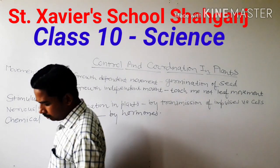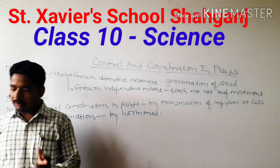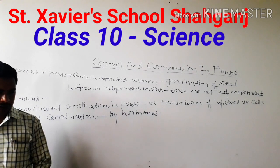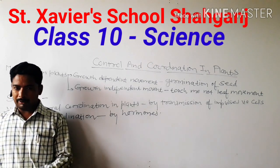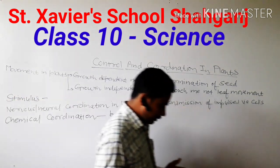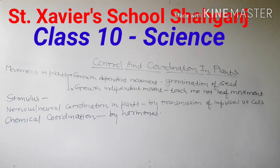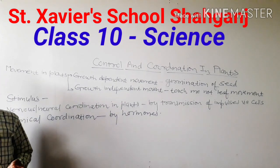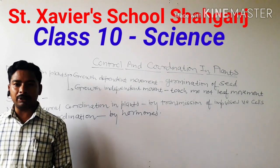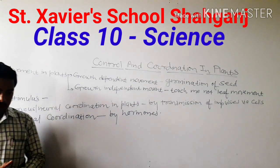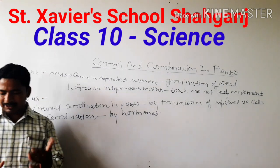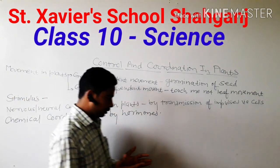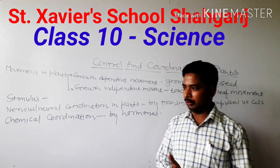Let us start with movement in plants. You all must have noticed different types of movements in plants. The easiest example is when we touch the Mimosa Pudica plant — called Lajvanti or Sui Mui in Hindi. When we touch it, wherever we touch the plant body, movement is seen in the leaves. The plant is sensitive to touch, and as we touch it, the leaves start to fold and droop down.